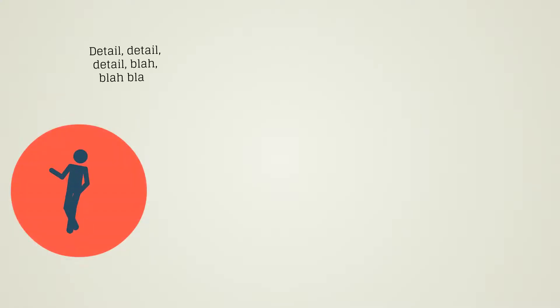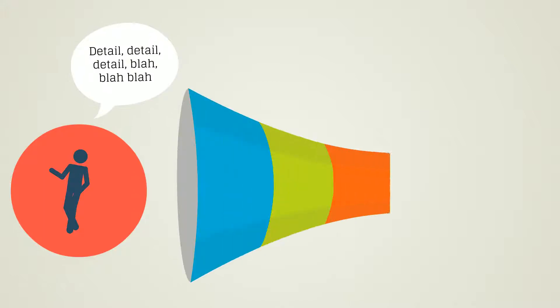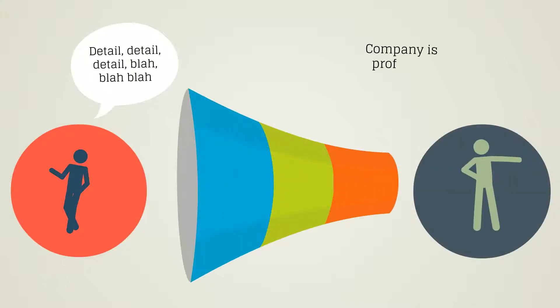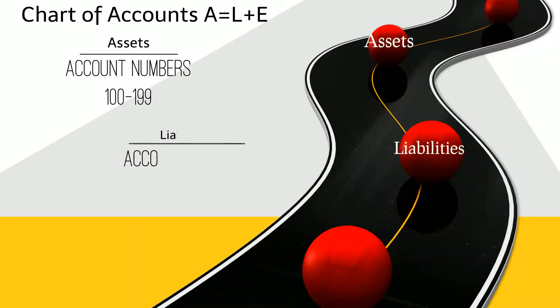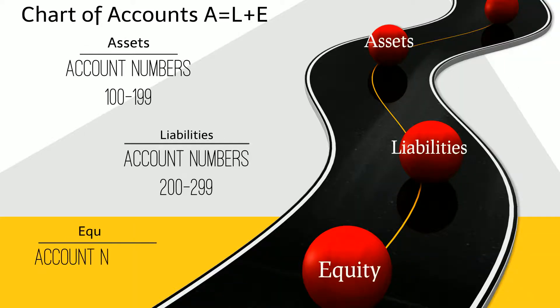When financial data is communicated, it has to be consolidated into meaningful, readable information for those needing it. The chart of accounts is the map for financial information. The account numbers align with the accounting equation, giving you the direction where entries should go.